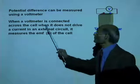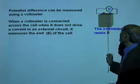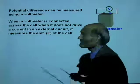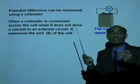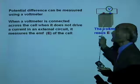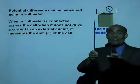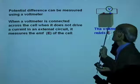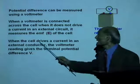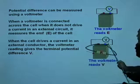When the voltmeter is connected across the cell, what it reads is the EMF — the cell is in open circuit and not driving current in an external circuit. To measure the EMF of a cell, connect a voltmeter directly across the cell; that reading will be the EMF.